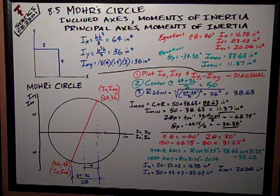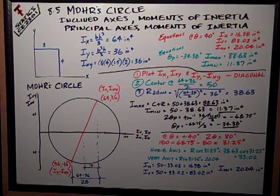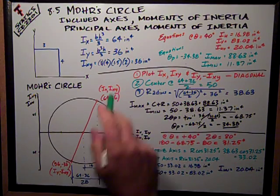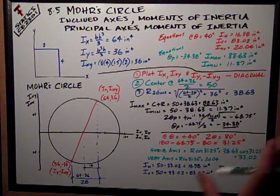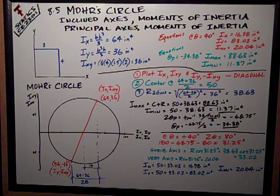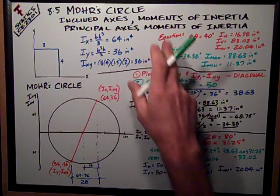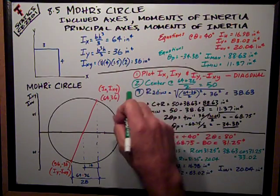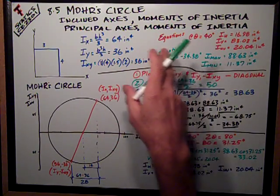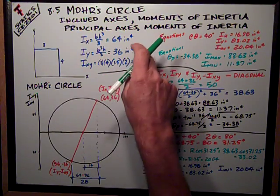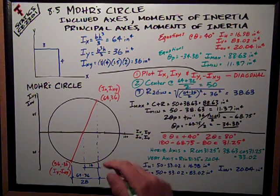Mohr's Circle is a graphical presentation of rotated axes, rotated coordinates, and rotated moments of inertia. It presents everything all in one clear picture for us to comprehend and see the relationships between things. It's used for inclined axes and the moments of inertia associated with them, and the principal axes, which are the maximum and minimum moments of inertia.